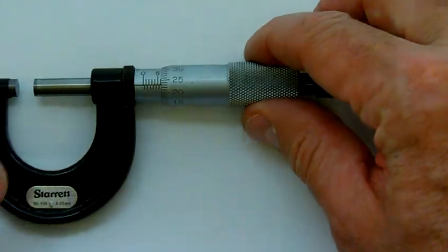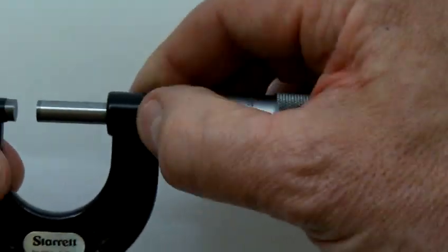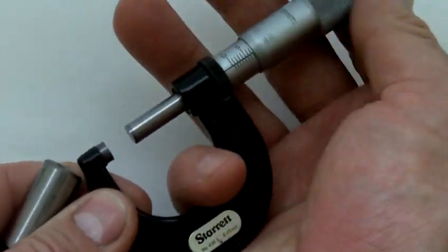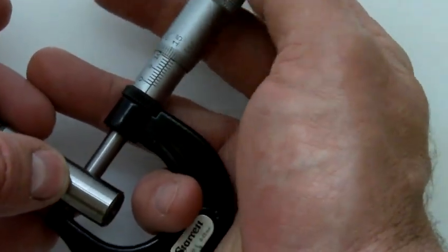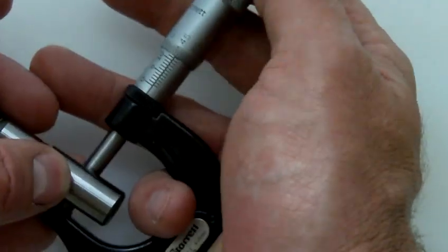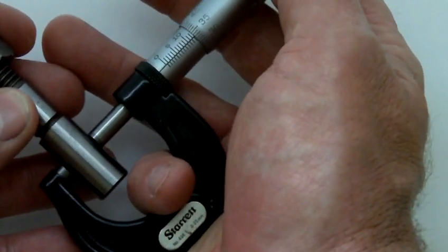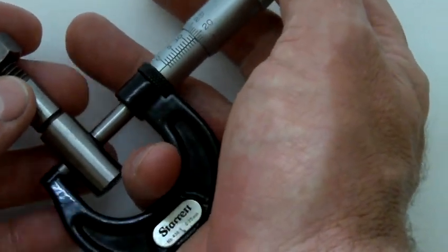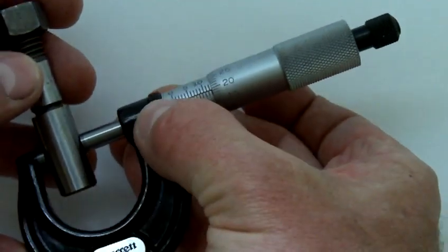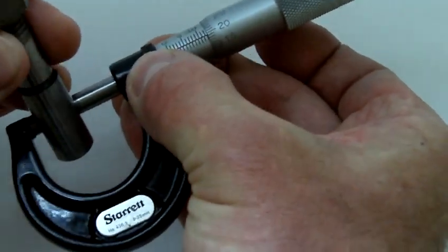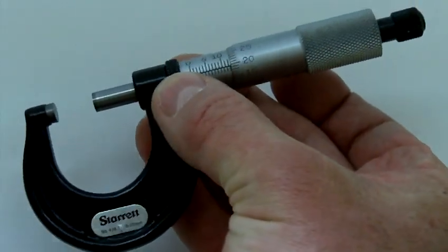Let's try another one. So using the other part that we had done with the inch one, we'll take the measurement of the outside of this piece. So I'm just opening the anvil and spindle to fit over it. Again, we'll click the ratchet stop, lock it, pull the part out. Let's have a look at the size of this one.